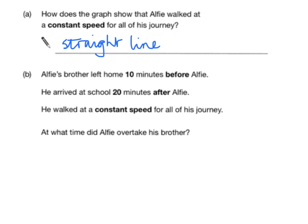Question B says that Alfie's brother left home 10 minutes before Alfie, and he arrived at school 20 minutes afterwards, and he walked at a constant speed. We now know that constant speed means his graph will also be a straight line. We need to draw this on the graph.